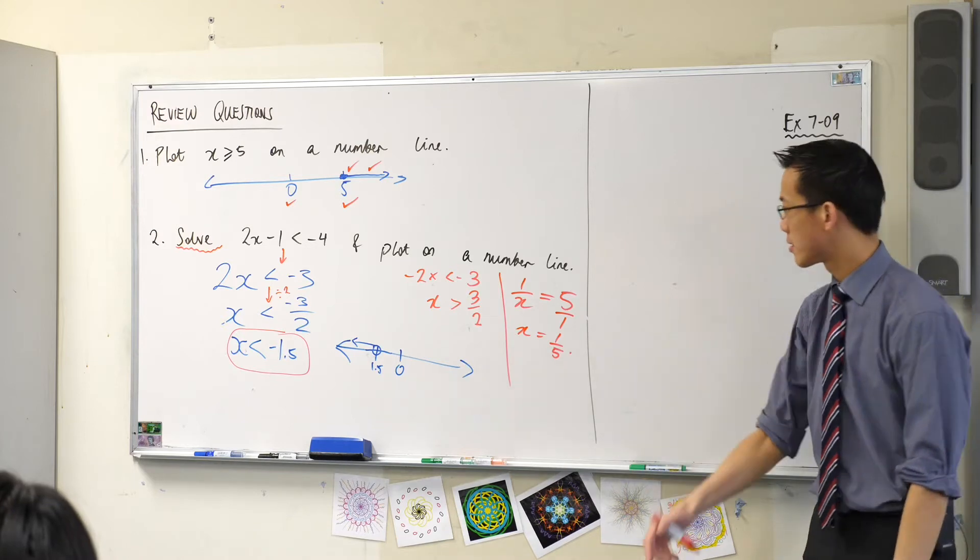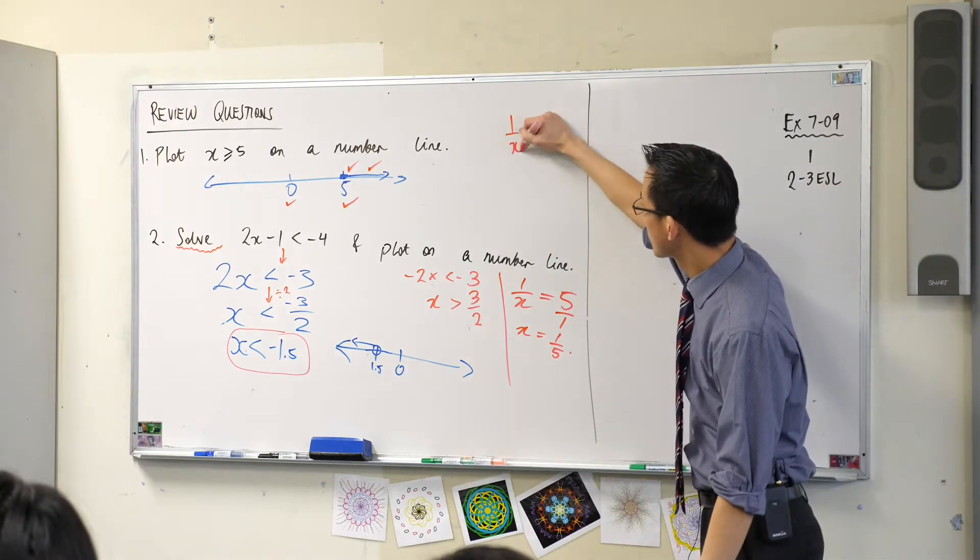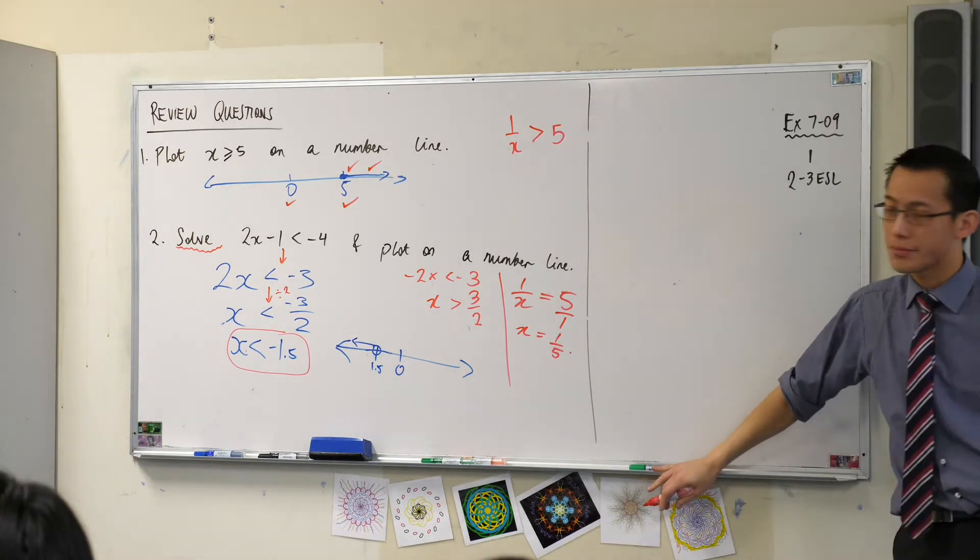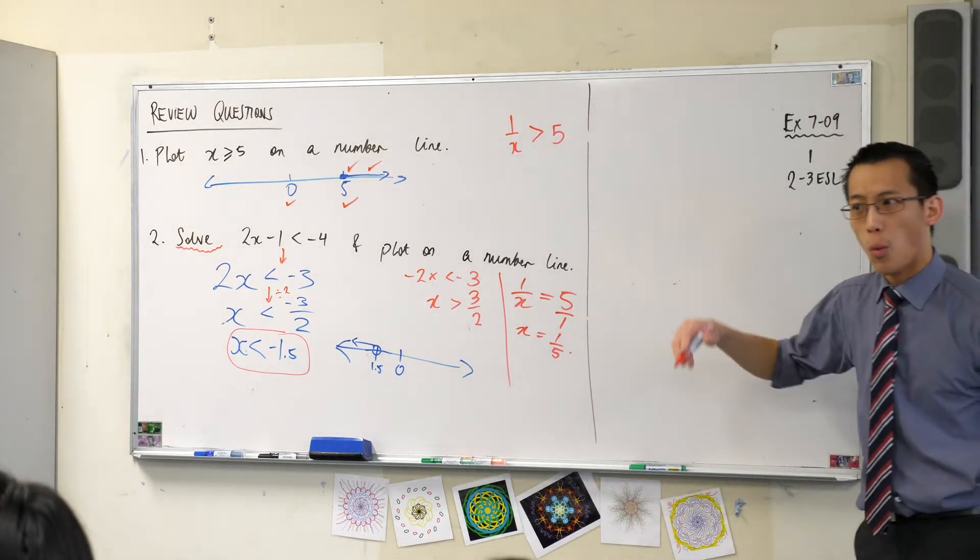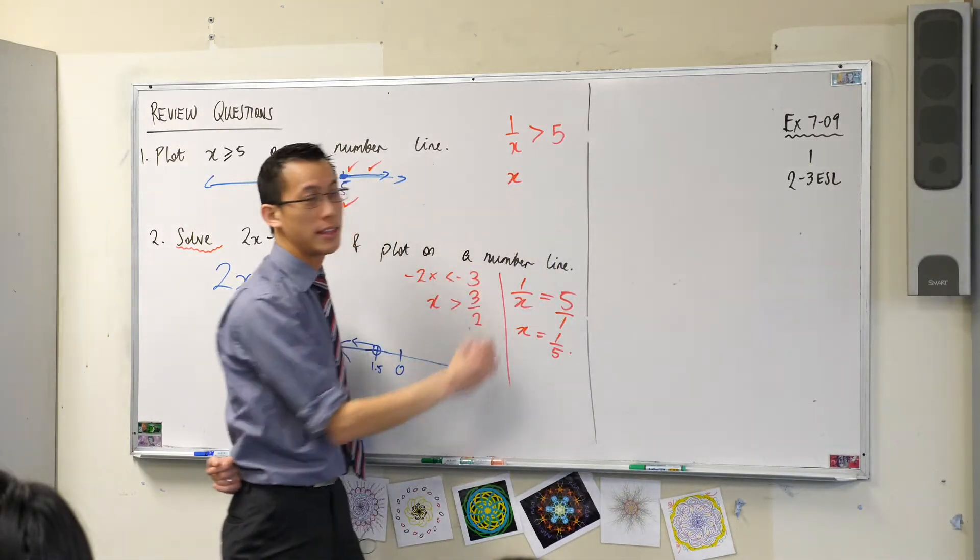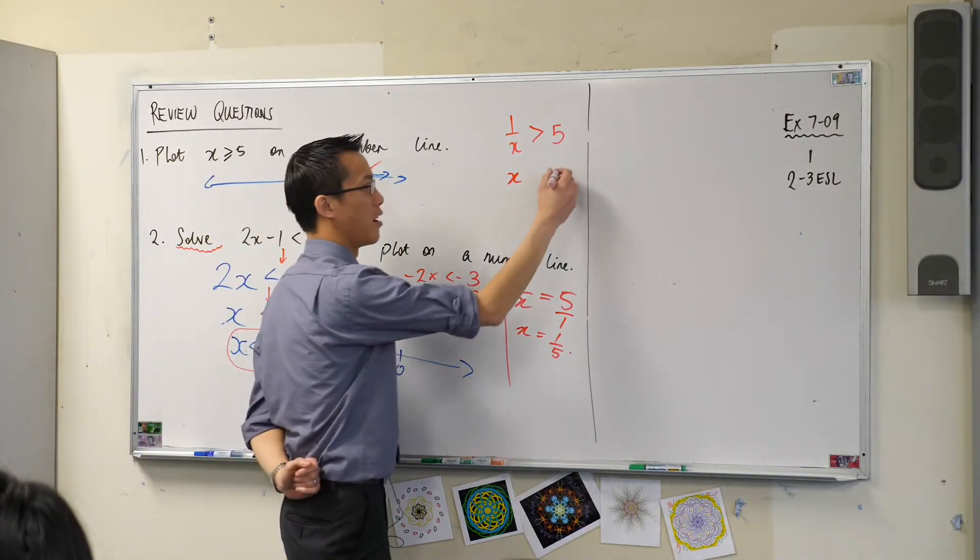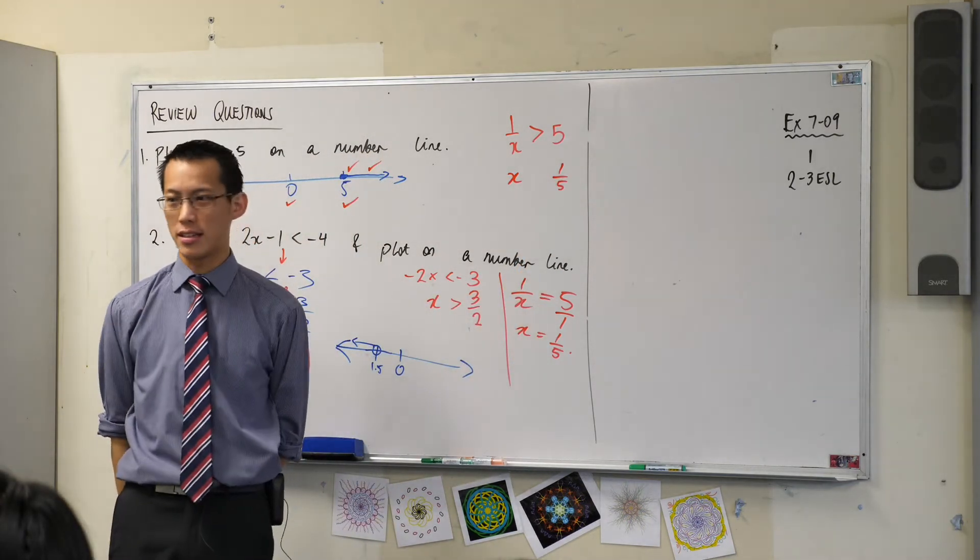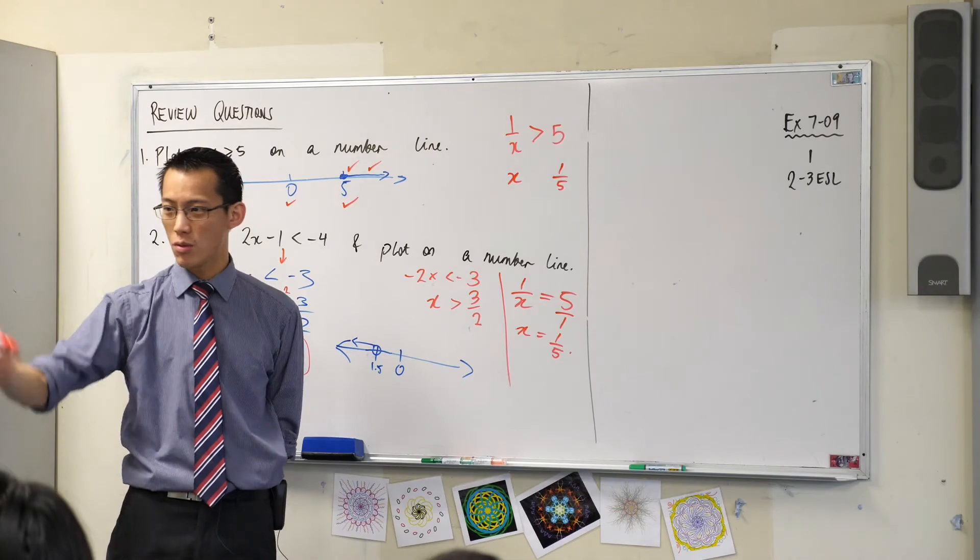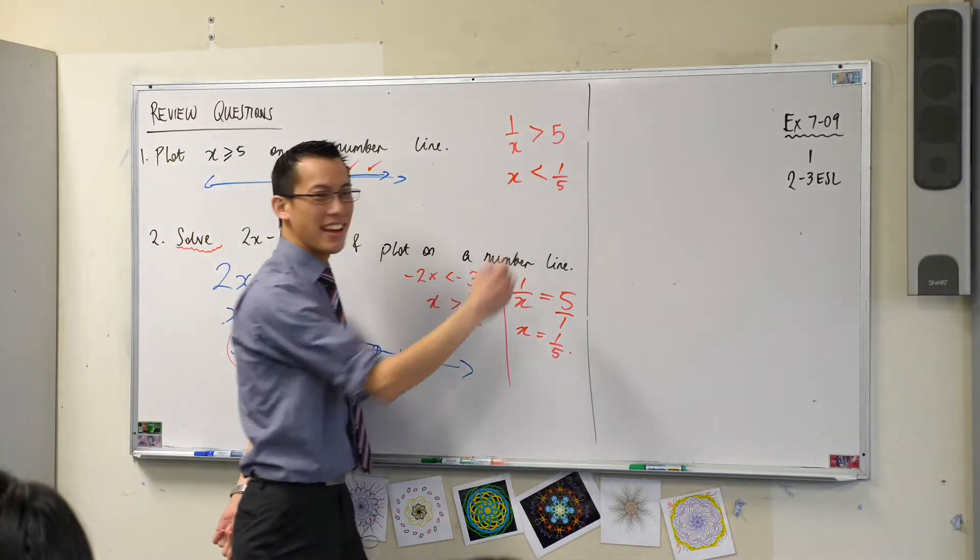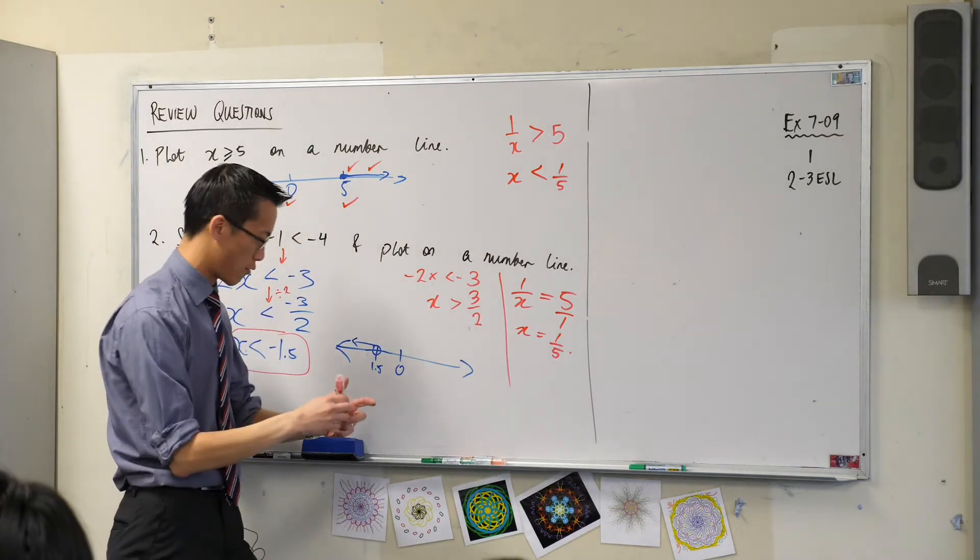But if I said this, when you take the reciprocal of the left-hand side, like this, and the reciprocal of the right-hand side, like this, the inequality isn't going to be going in the same direction. Can you see why, Jacob? Oh, you're going to say that? Let me give you a quick example to prove this for you.